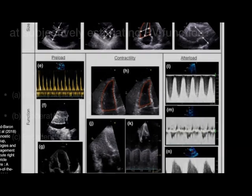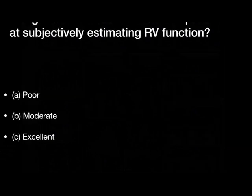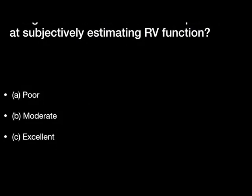For contractility, first use your eyeball — make measurements of RV size in all views and observe how that heart is functioning. If you think it's severely abnormal but all your numbers say it's normal, one of them is out — go back and reassess. If your numbers match your visual assessment, that gives you confidence. If they don't match, ask yourself why.